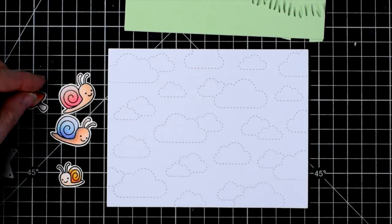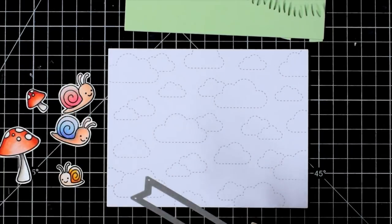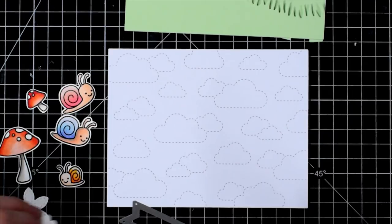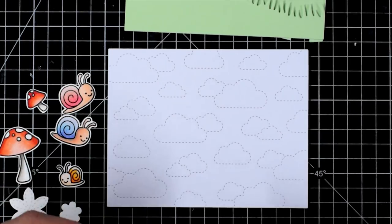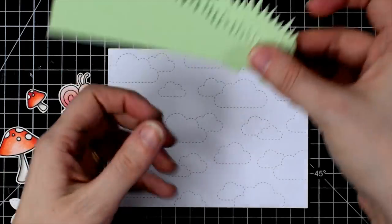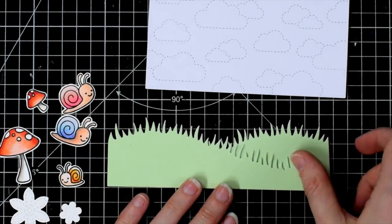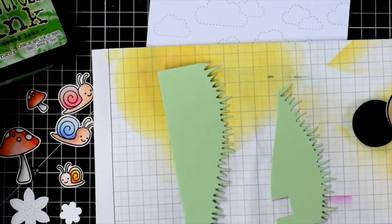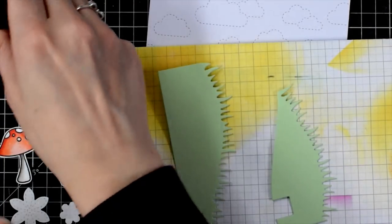I've prepared some little critters and little images for my card today. The little snails and mushrooms are from Lawn Fawn's Gleeful Gardens and then the little flowers are from MFT, the Stitched Flowers Dynamics.